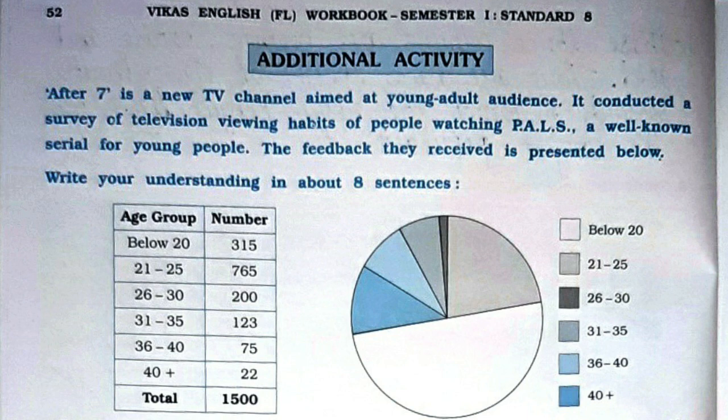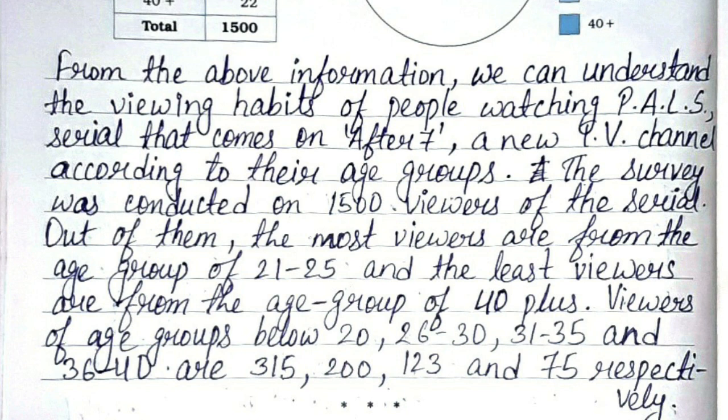Additional activity: According to the pie chart, write about eight sentences. From the above information, we can understand the viewing habits of people watching the serial that comes on after 7 on a new TV channel, according to their age groups. The survey was conducted on 1,500 viewers. The most viewers are from the age group of 21 to 25, and the least viewers are from the age group of 40 plus. Viewers from age groups below 20, 26–30, 31–35, and 36–40 are 315, 200, 123, and 75 respectively.